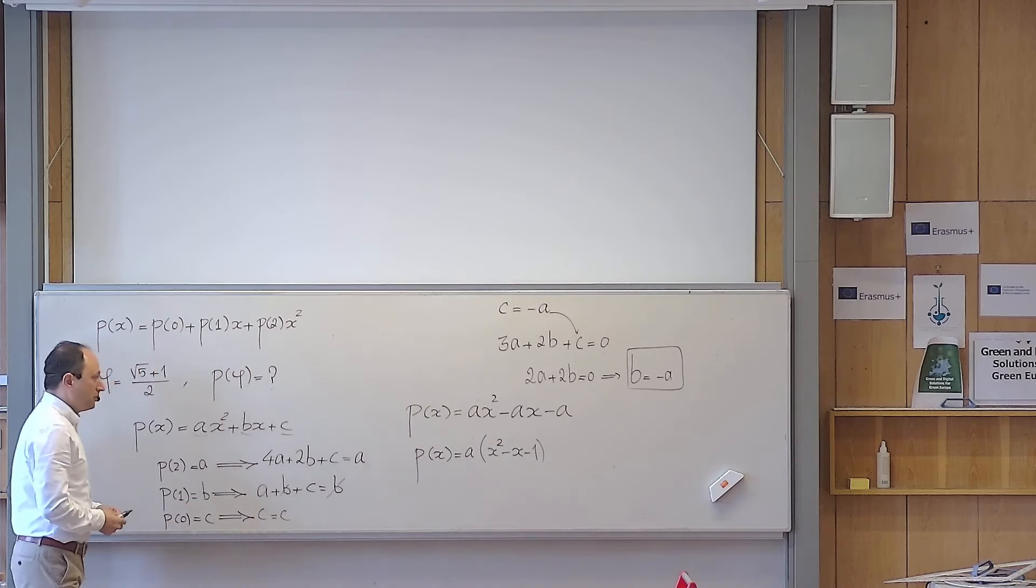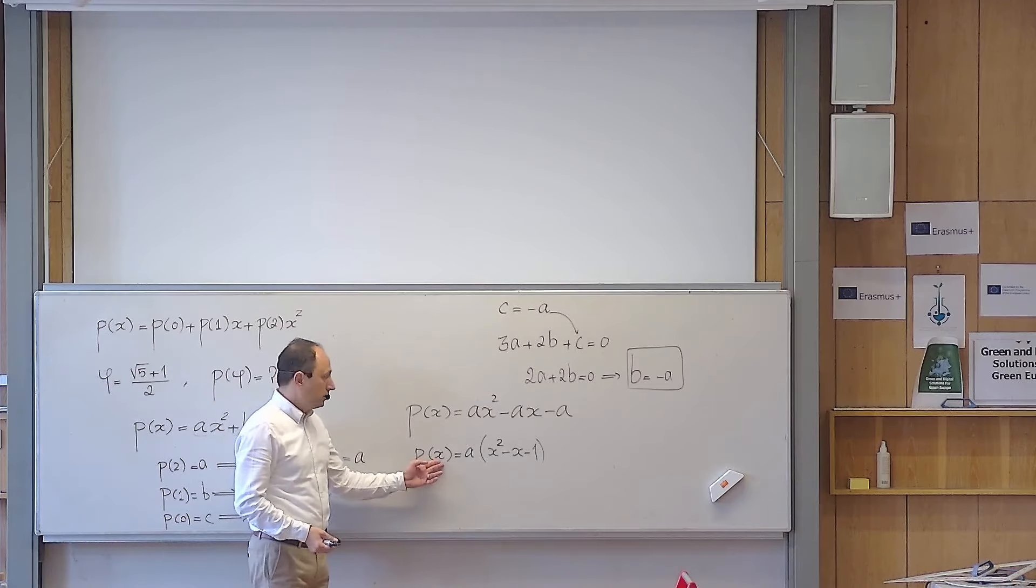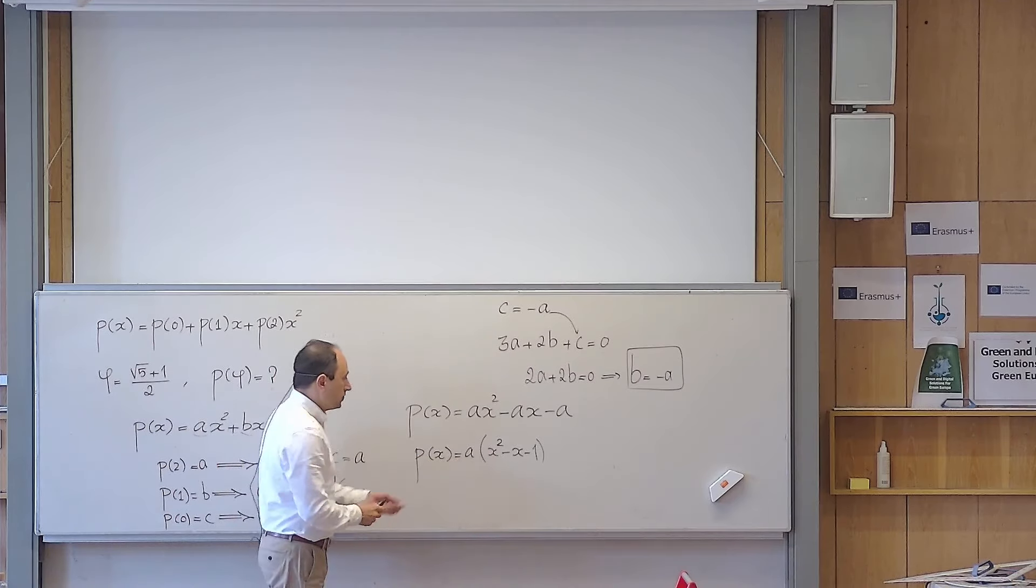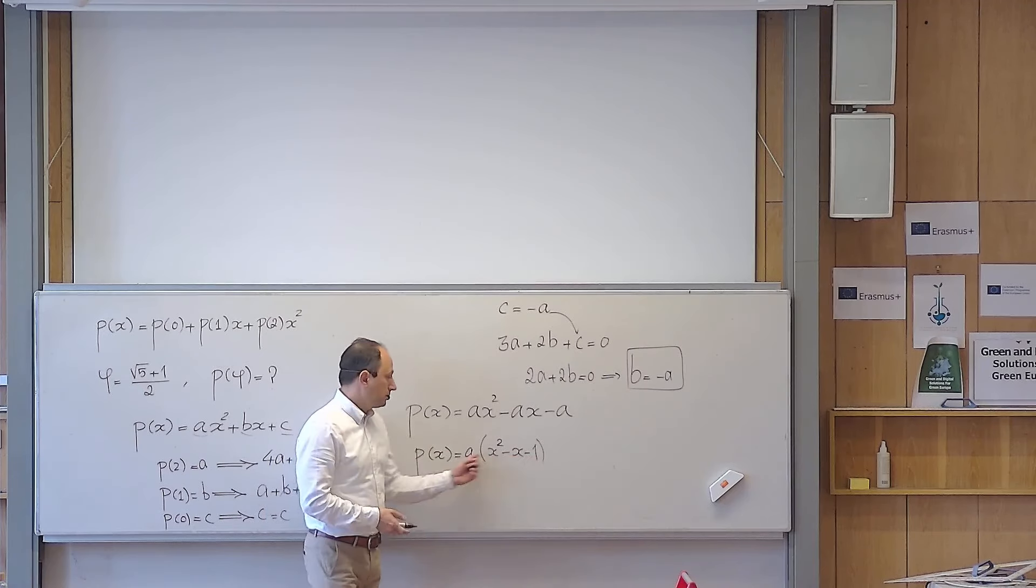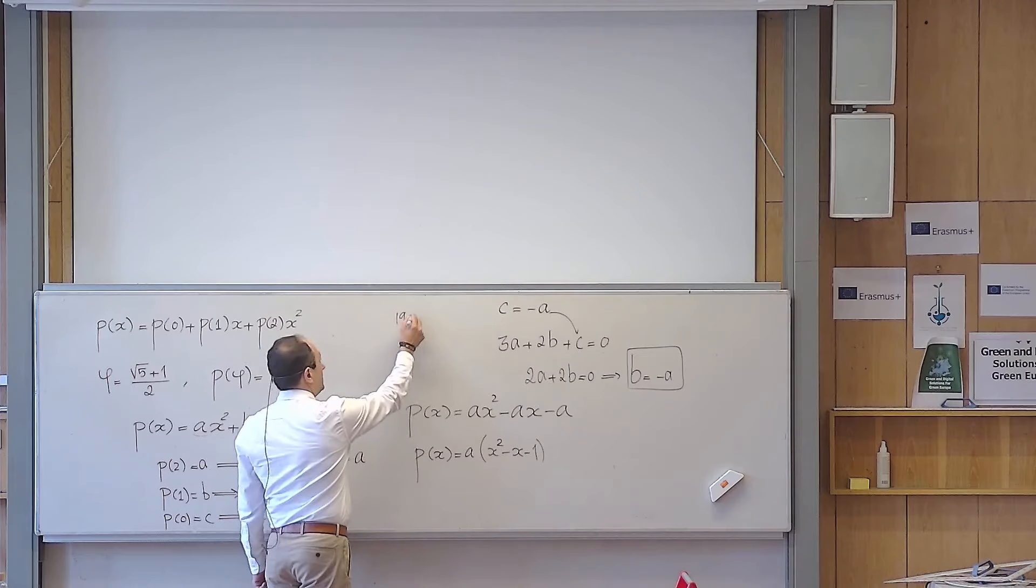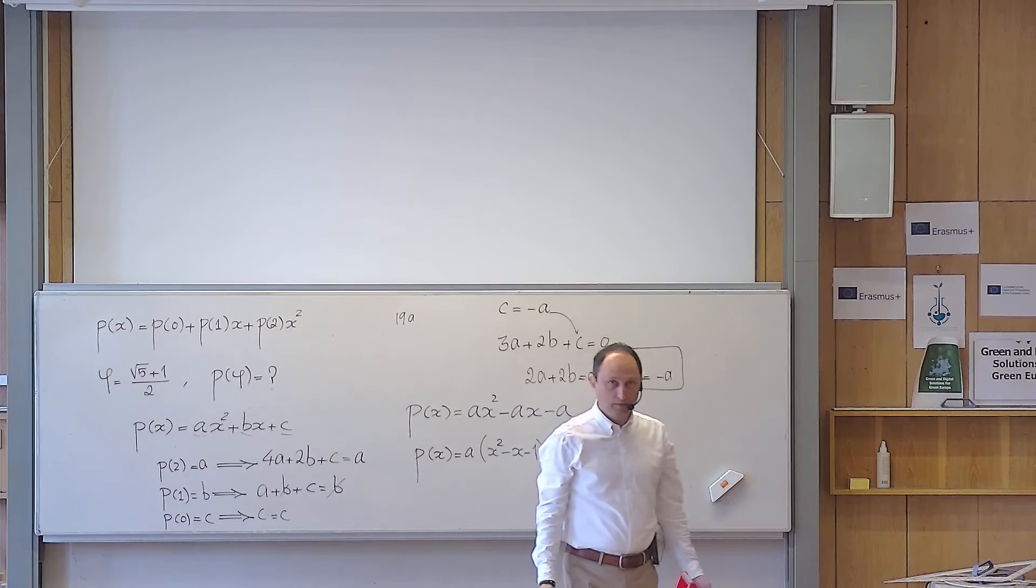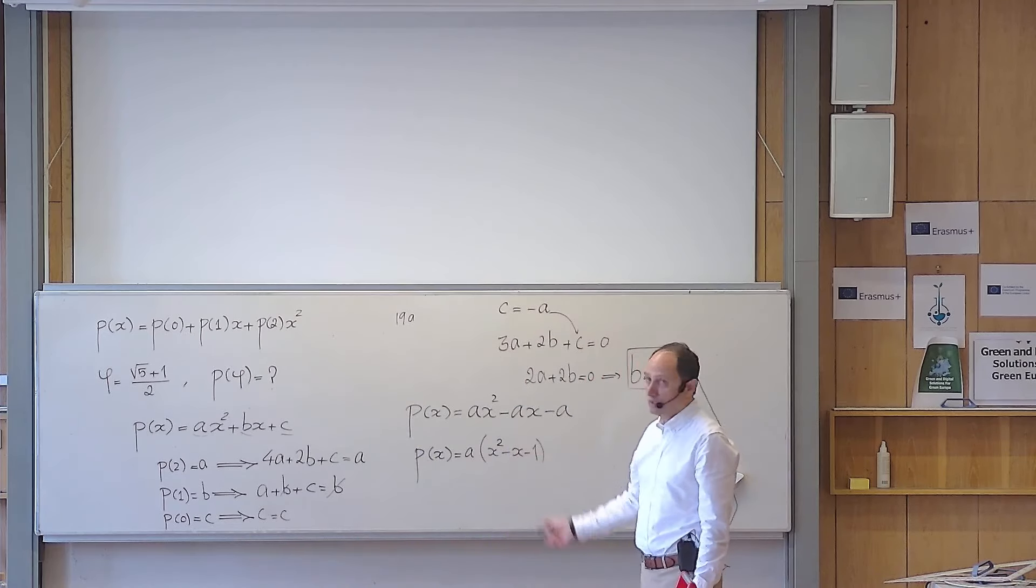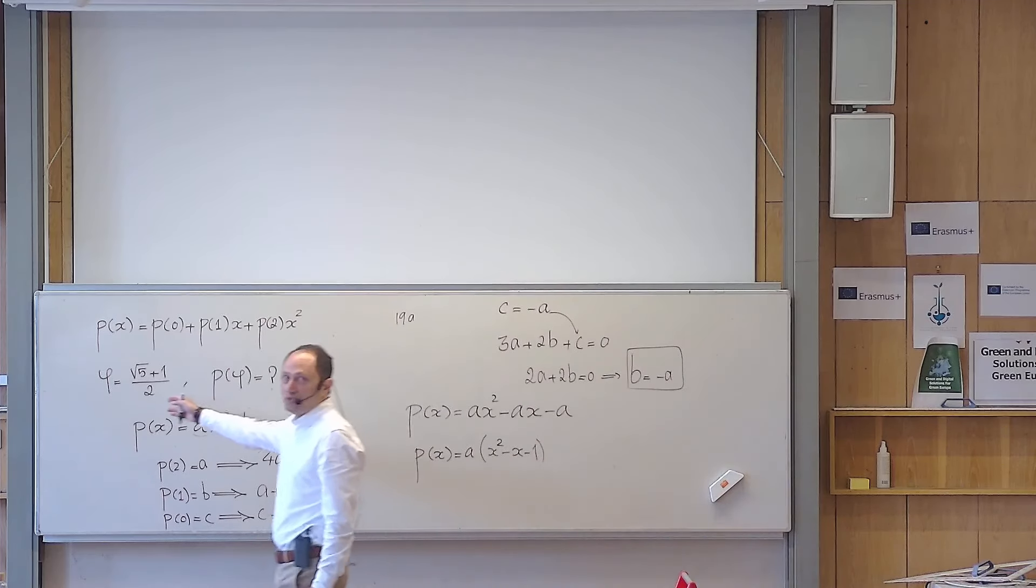Now, okay, so in principle, if I ask you what is p of 5, you put 5 there, it becomes 25 minus 5, 20 minus 1, 19. The answer is 19a. And there is no way for you to actually calculate a from the information given in the problem. Okay.